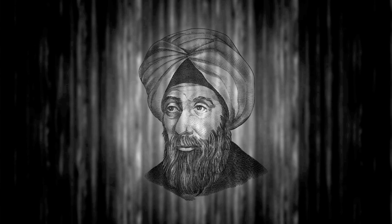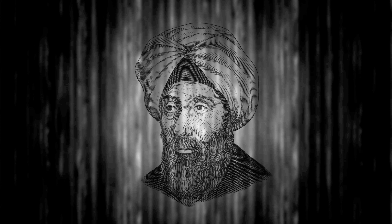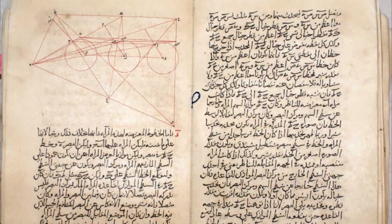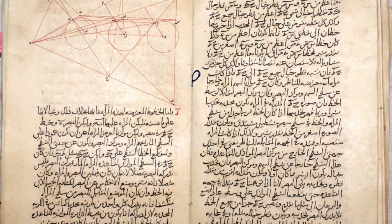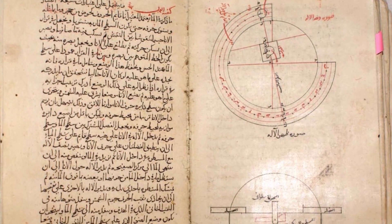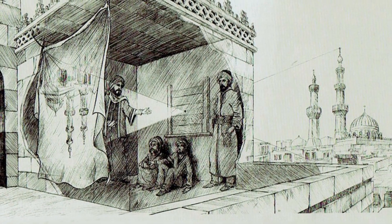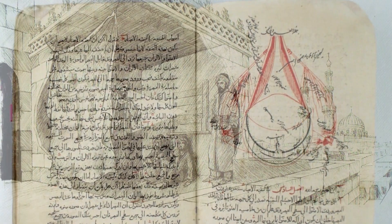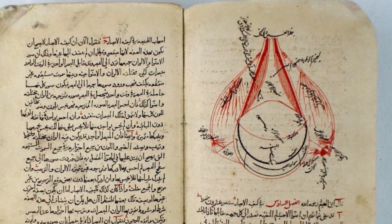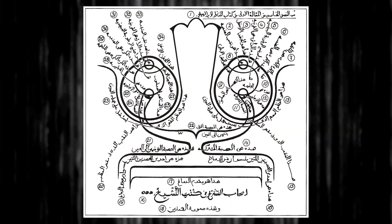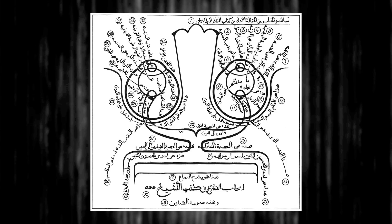يصعب الحديث عن العين والإبصار دون ذكر أعظم العلماء في علم البصريات: أبو علي الحسن بن الهيثم، الذي كانت أعماله الأساس الذي بنى عليه الغرب نظرياته في اكتشاف المجهر والتليسكوب وفيزيولوجيا الإبصار. وهو أول من شرح العين تشريحاً كاملاً ووضح وظائفها وأجزائها قبل أكثر من ألف عام في مرجعه العظيم 'المناظر'.